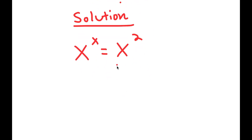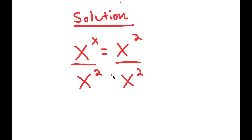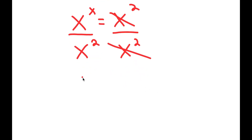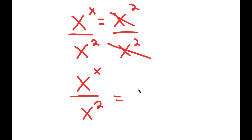Now I'm going to divide both sides by x to the power of 2. So then these two cancel out, and I get x to the power of x over x to the power of 2 is equal to 1.